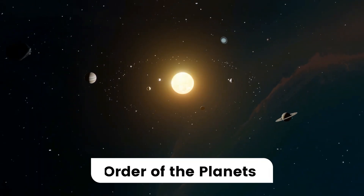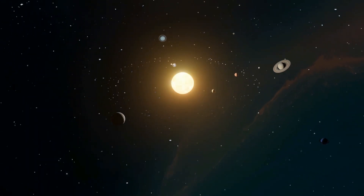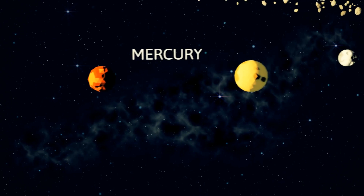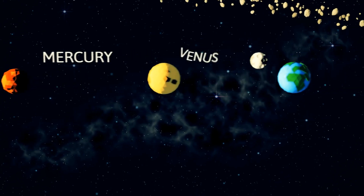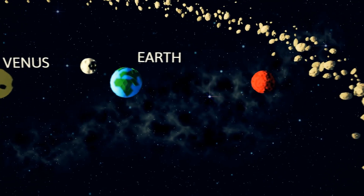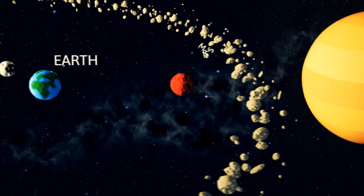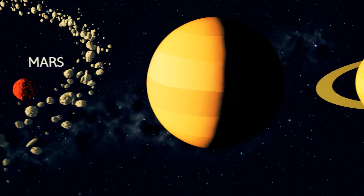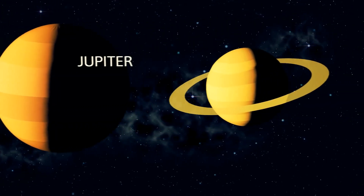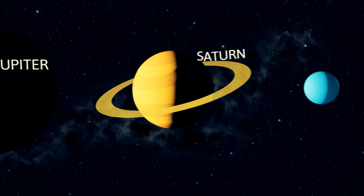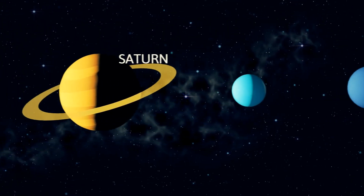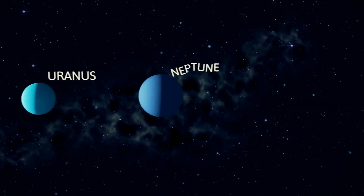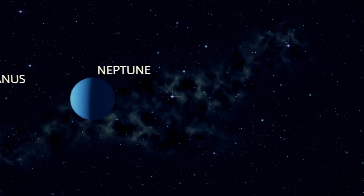4. Order of the Planets: Mercury, Venus, Earth, Mars, Jupiter, Saturn, Uranus and Neptune. Mnemonic: My very excited mother just served us nachos.